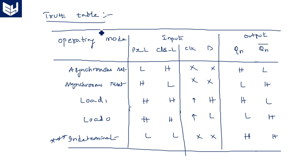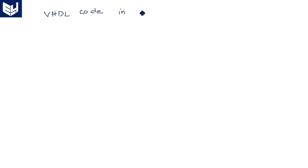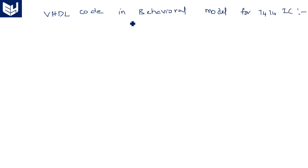Based on this truth table we can write a VHDL program for the D flip-flop in terms of behavioral modeling. Whenever you are writing VHDL code using a truth table, you are writing in terms of behavioral model. We have to use a process statement and if-else conditions. So this is the VHDL code in behavioral model for the 7474 IC.